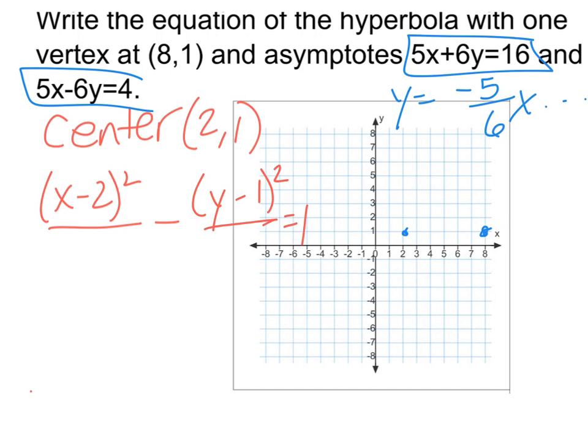To be honest, it didn't matter which one I picked, because one of them is going to be positive 5/6, the other one is going to be negative 5/6.